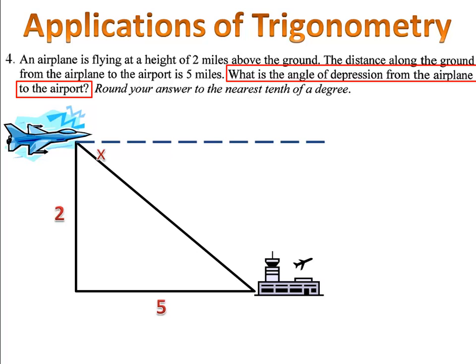Remember, the angle of depression has the same measure as the angle of elevation. That actually makes sense because if the pilot is looking down at the airport and the person at the airport is looking up at the airplane, they must be looking at the same angle.